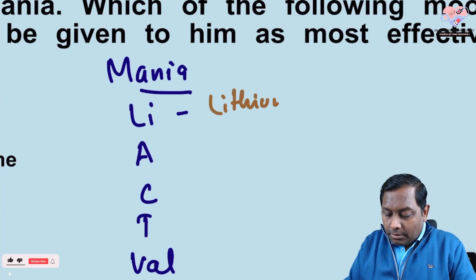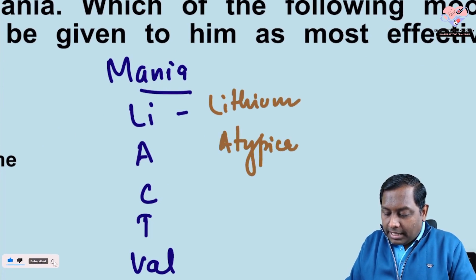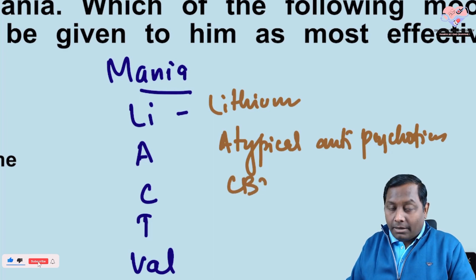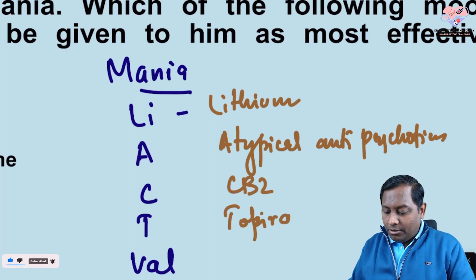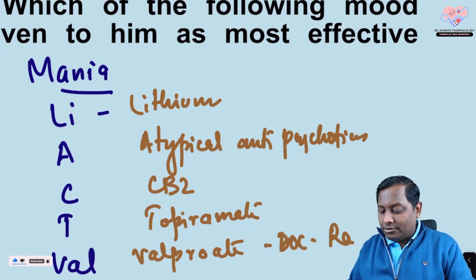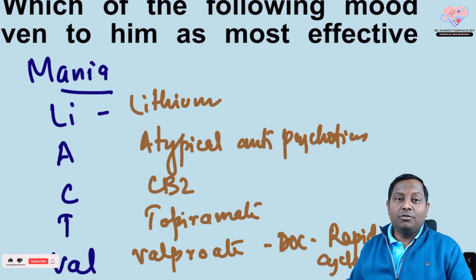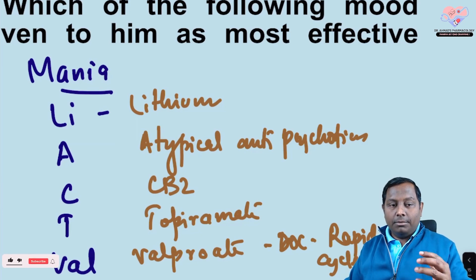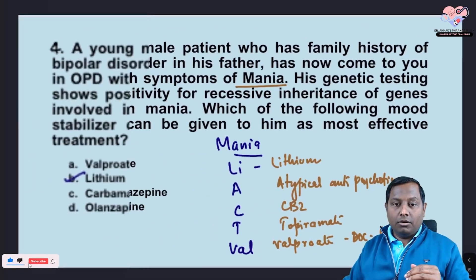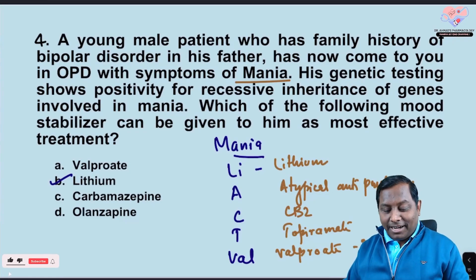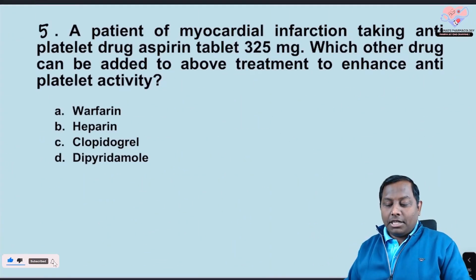All drugs that can be used in mania: L stands for lithium, A stands for atypical antipsychotics — which is also the preferred drug in pregnancy — C stands for carbamazepine, T stands for topiramate, and V stands for valproate. Valproate is the drug of choice in rapid cyclers. Rapid cyclers are patients with bipolar disorder who have four or more episodes in a year.